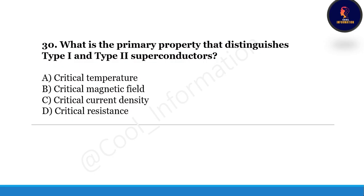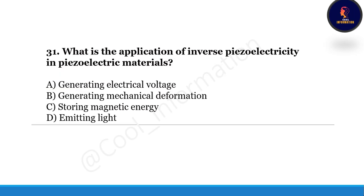Moving to question 30: what is the primary property that distinguishes type 1 and type 2 superconductors — option A: critical temperature, option B: critical magnetic field, option C: critical current density, option D: critical resistance? Correct option is B, critical magnetic field.